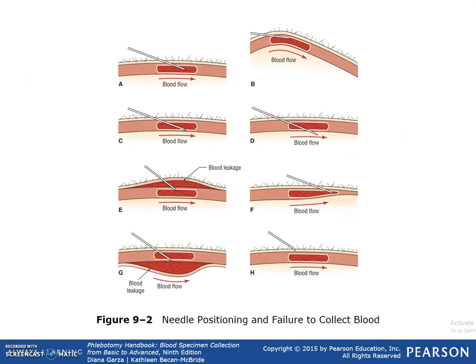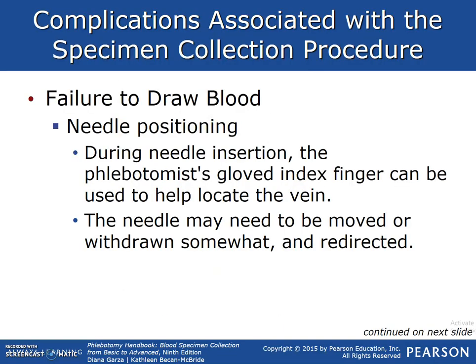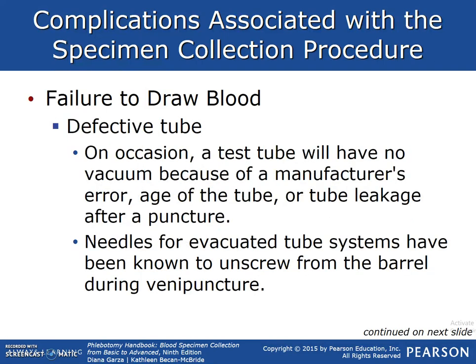Needle position and failure to collect blood: this grid will be reviewed in class in detail. During needle insertion, the phlebotomist's gloved index finger can be used to help locate the vein above the needle site. The needle may need to be moved, withdrawn somewhat, and redirected — this will be shown during live draws. On occasion, a test tube will have no vacuum due to manufacturer's error; the tube may push back against you. The age of the tube or tube leakage after puncture can also cause issues, and needles for evacuated tube systems have been known to unscrew from the barrel during venipuncture.